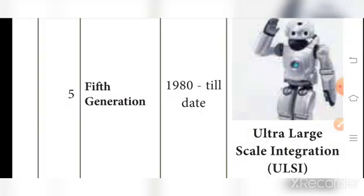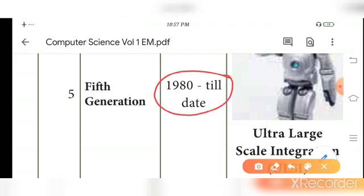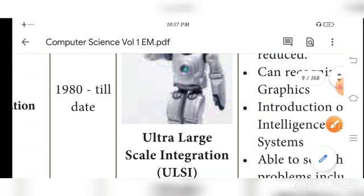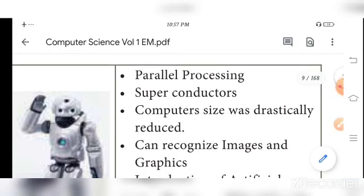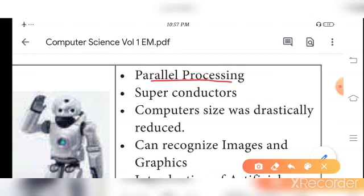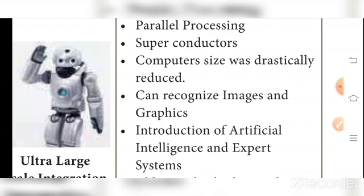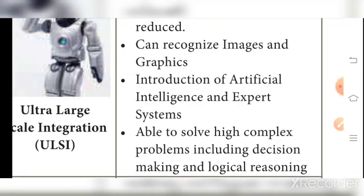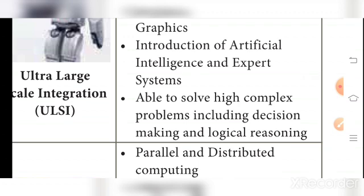The fifth generation period is 1980 onwards. The component used is ultra-large-scale integration (ULSI). Features include parallel processing, which enables multitasking and multiple calculations simultaneously, and superconductors. Computer size was drastically reduced. Artificial intelligence and expert systems were introduced, capable of logical reasoning and decision making.